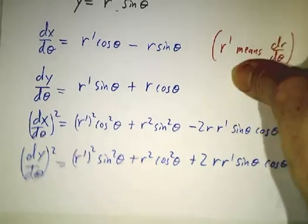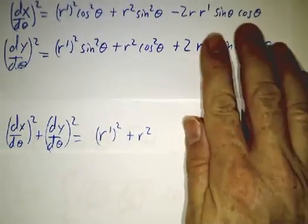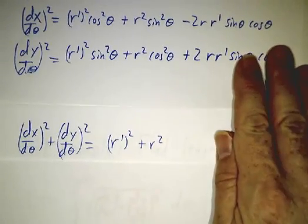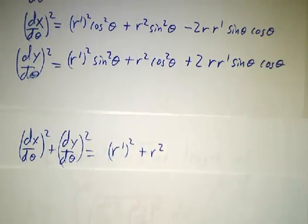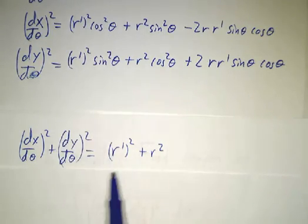So when you add the two things up, when you look at dx dθ squared plus dy dθ squared, it really simplifies. The r' squared cos squared plus r' squared sin squared just gives you an r' squared.